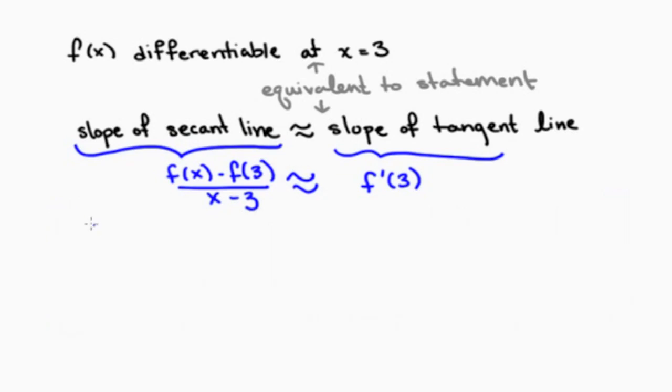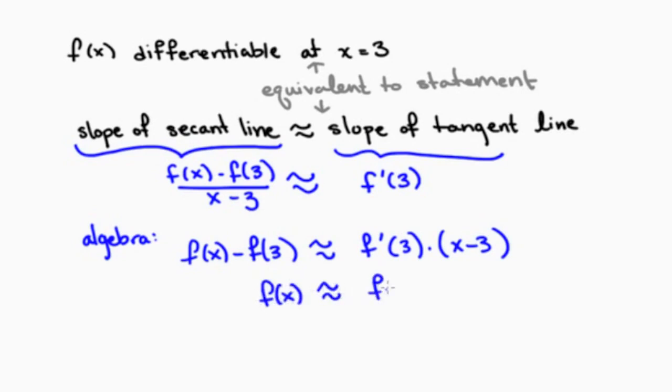To relate all of this to linear approximations, we use a bit of algebra. First, we multiply both sides by x-3. And we get f(x) - f(3) approximately equal to f'(3)(x-3). Adding f(3) to both sides, we get that f(x) is approximately equal to f(3) + f'(3)(x-3). And this right hand side is then the equation for the tangent line at 3. So indeed, the tangent line closely approximates the function as long as x is close to 3.